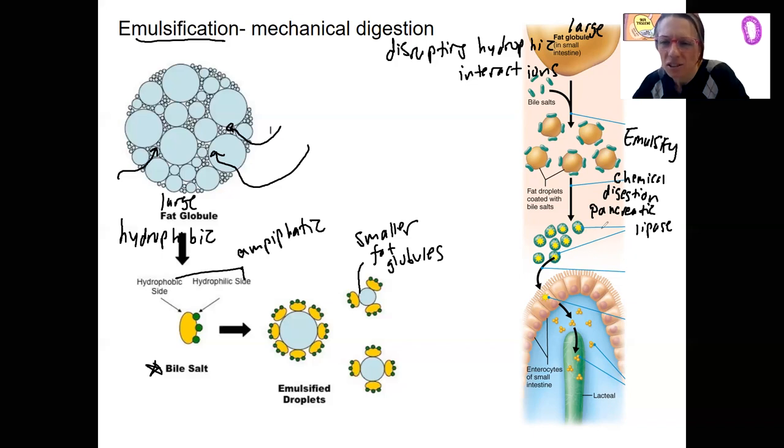These are called micelles. I'm not sure if I'll come back to that. They're basically stabilized by bile salts again so that they can be carried and absorbed into these enterocytes. How can these get through here? Well, they're hydrophobic, so they can just go right in there.